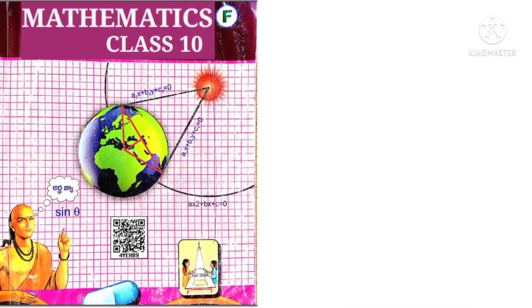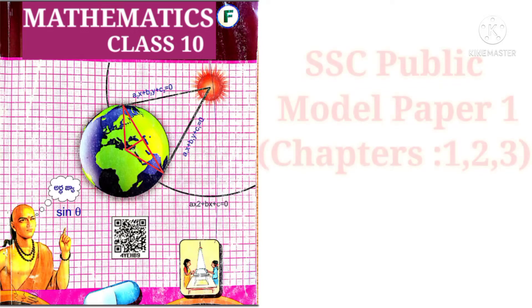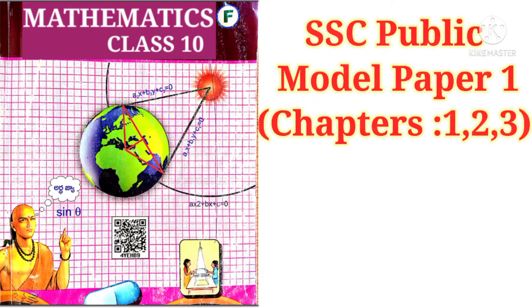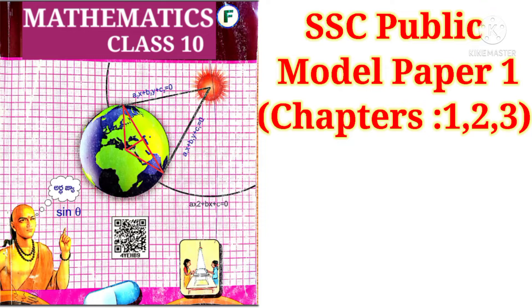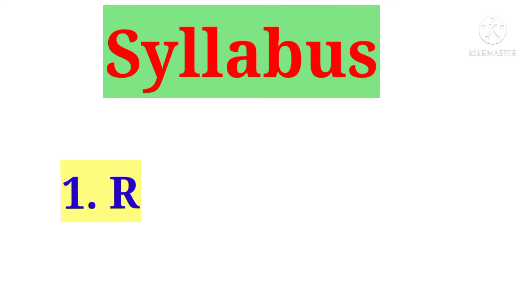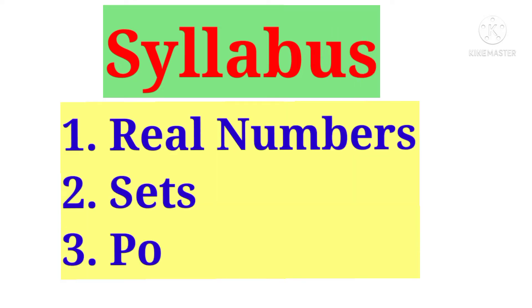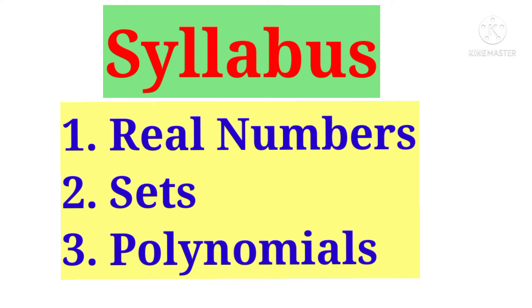Welcome to Shaker Maths. Today we are going to observe 10th Class Mathematics, SSE Public Model Paper 1 based on chapters 1, 2, and 3, worth 100 marks for the academic year 2021-22. Let us see the syllabus. First chapter is Real Numbers, second chapter Sets, and third chapter is Polynomials.